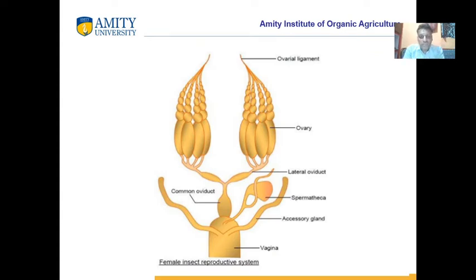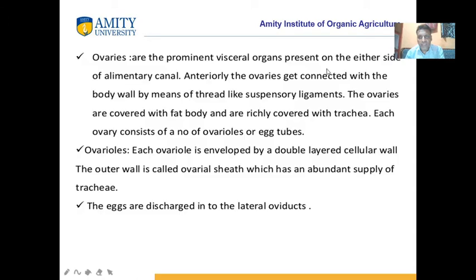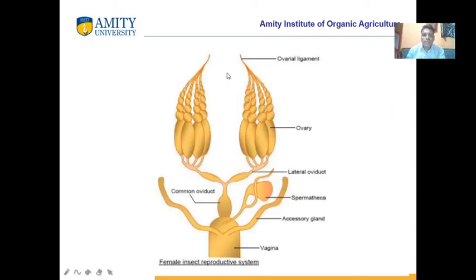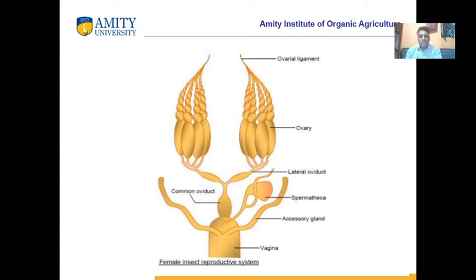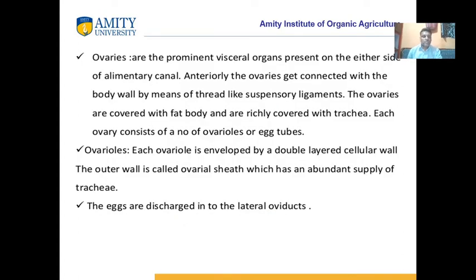The female reproductive organ has a ligament at the top called the ovariolar ligament. The large sac-like structure is the ovary. The lateral oviduct connects, forming the common oviduct. The spermatheca is where sperms are stored, with the spermathecal gland attached. There are also accessory glands and the genital organ, the vulva or copulatory organ.